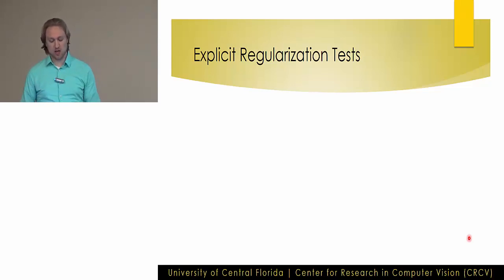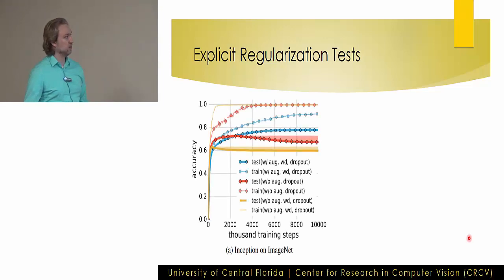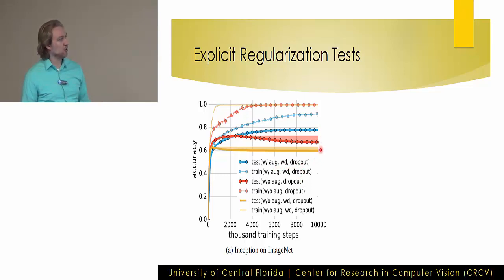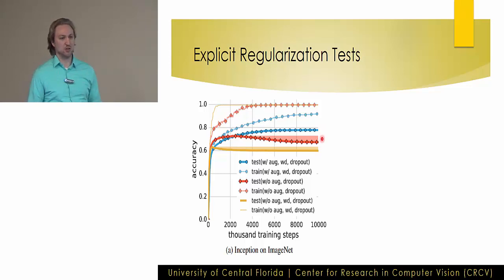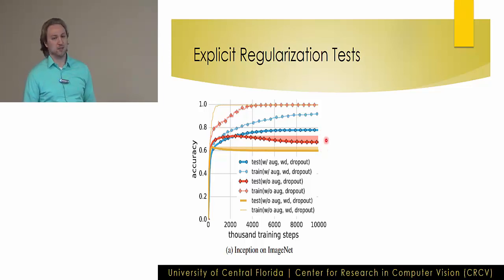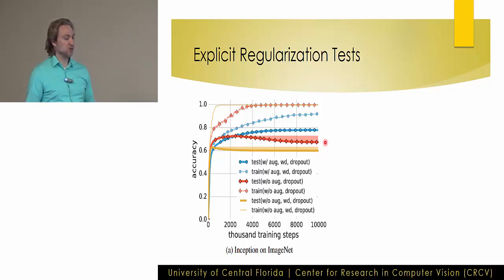Now examining regularization: they test different types of explicit regularization — data augmentation, weight decay, and dropout. The three lowest curves are testing performance. Blue uses all three methods; red uses data augmentation and dropout but no weight decay; orange uses none. The important takeaway is that there is not a very significant difference in generalization performance between using regularization and not using regularization. It certainly helps, but not as much as expected.